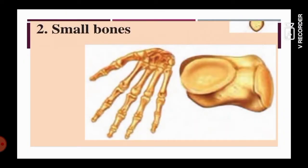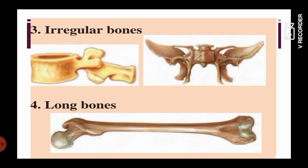The second type is small bones, which you can easily find in your palms or toes. Do you know where the smallest bone is? Inside your ear! The third type is irregular bones. In your vertebral column — touch the center of your back and you will feel cushion-like blocks stacked on each other — these are the vertebrae, and they are irregular bones. The pelvic girdle in your hips is also an irregular bone. The fourth type is long bones, present in our legs and arms.